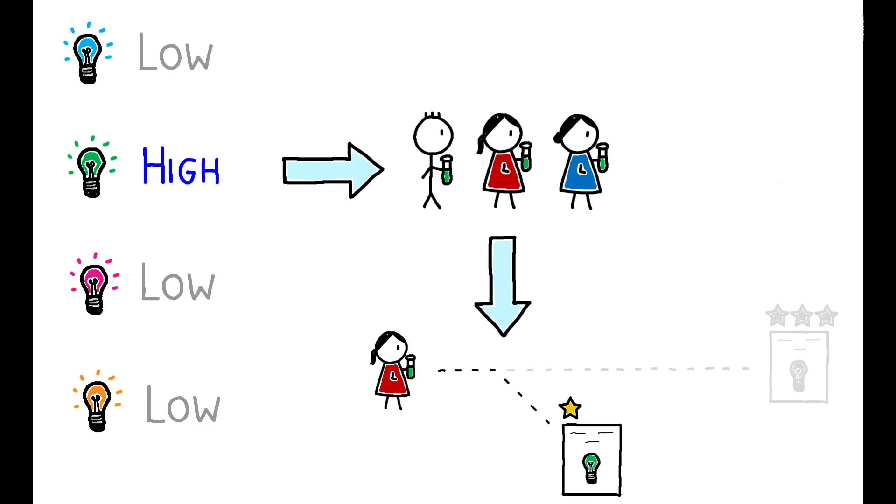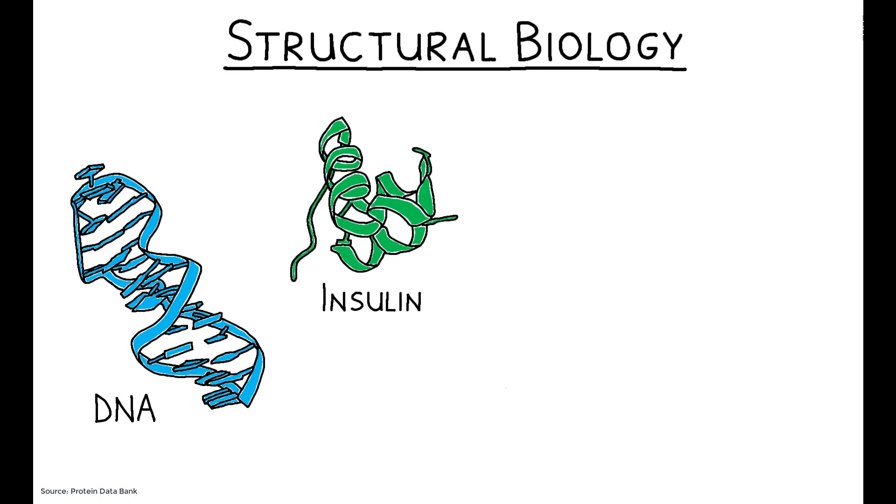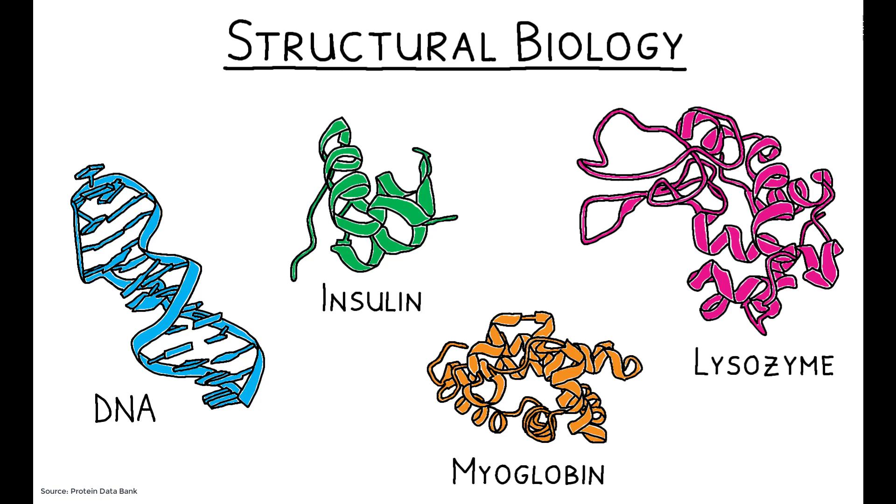To assess these dynamics empirically, the authors turn to structural biology. Scientists in this field map the three-dimensional structure of biological macromolecules, most commonly proteins, and this research plays a key role in drug and vaccine development.